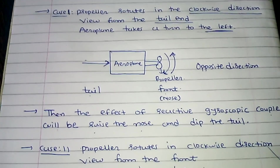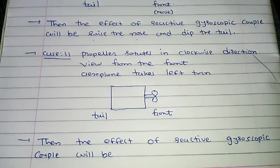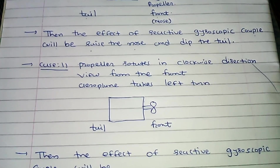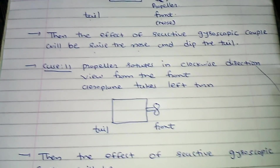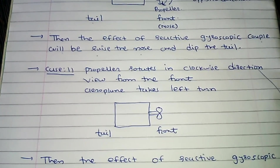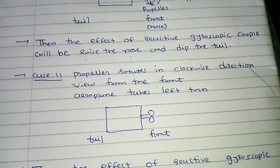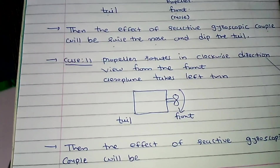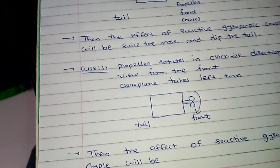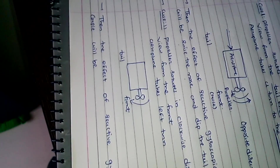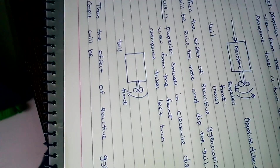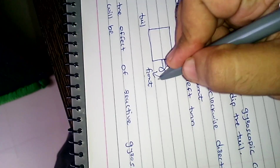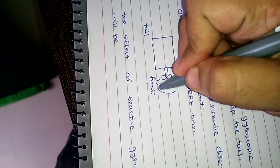For more clarification, we take a second example. In this example, again three conditions are given: propeller rotates in clockwise direction, view from the front end, and aeroplane takes a left turn. So make one rectangle and propeller. First condition is propeller rotates in clockwise direction, so make clockwise direction. View from the front side, so move the notebook to the front side. Aeroplane takes left turn — this is my right hand and this is my left hand — so make arrow to the left side.